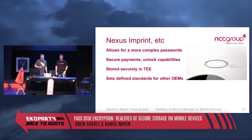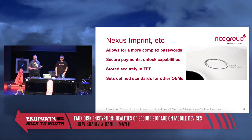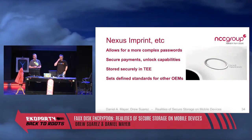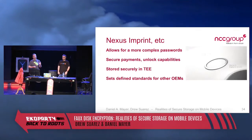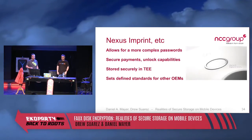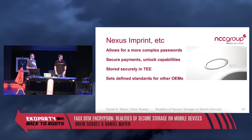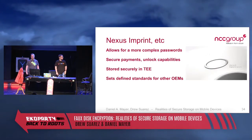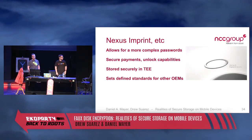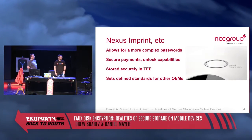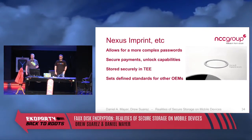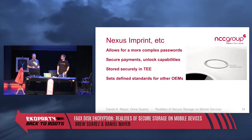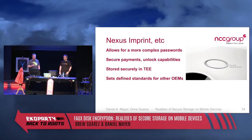Marshmallow also introduces Nexus Imprint, similar to Touch ID: fingerprint scanning is now fully supported by the Android Open Source Project. This allows better and more complex passwords — a very long one to decrypt the disk at boot, and then simply opening the device with your finger. Key material is stored securely in a trusted execution environment, so even with root it should not be accessible. Importantly, Google has set a defined standard for how OEMs must implement their fingerprint scanners, which should produce more consistent security going forward.